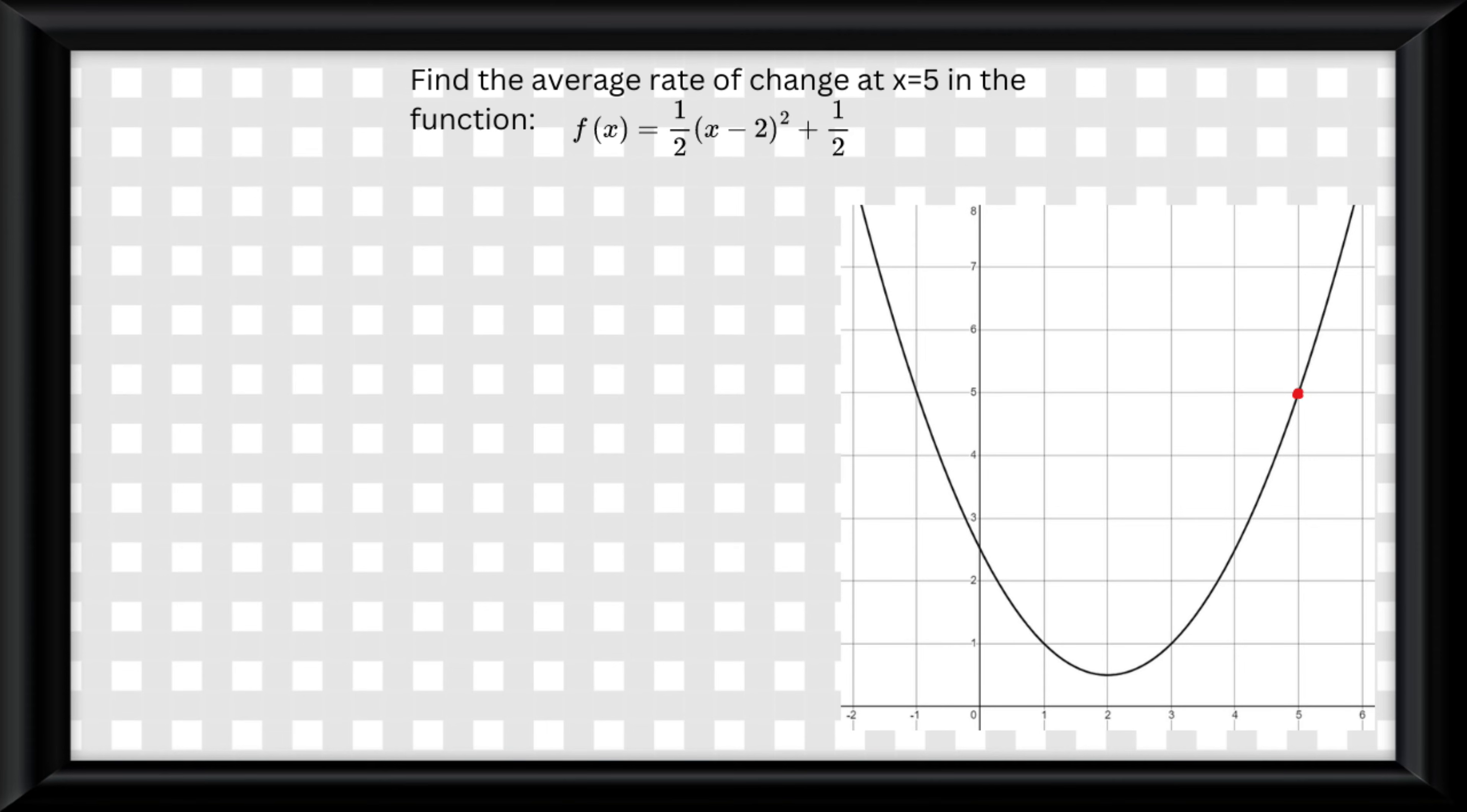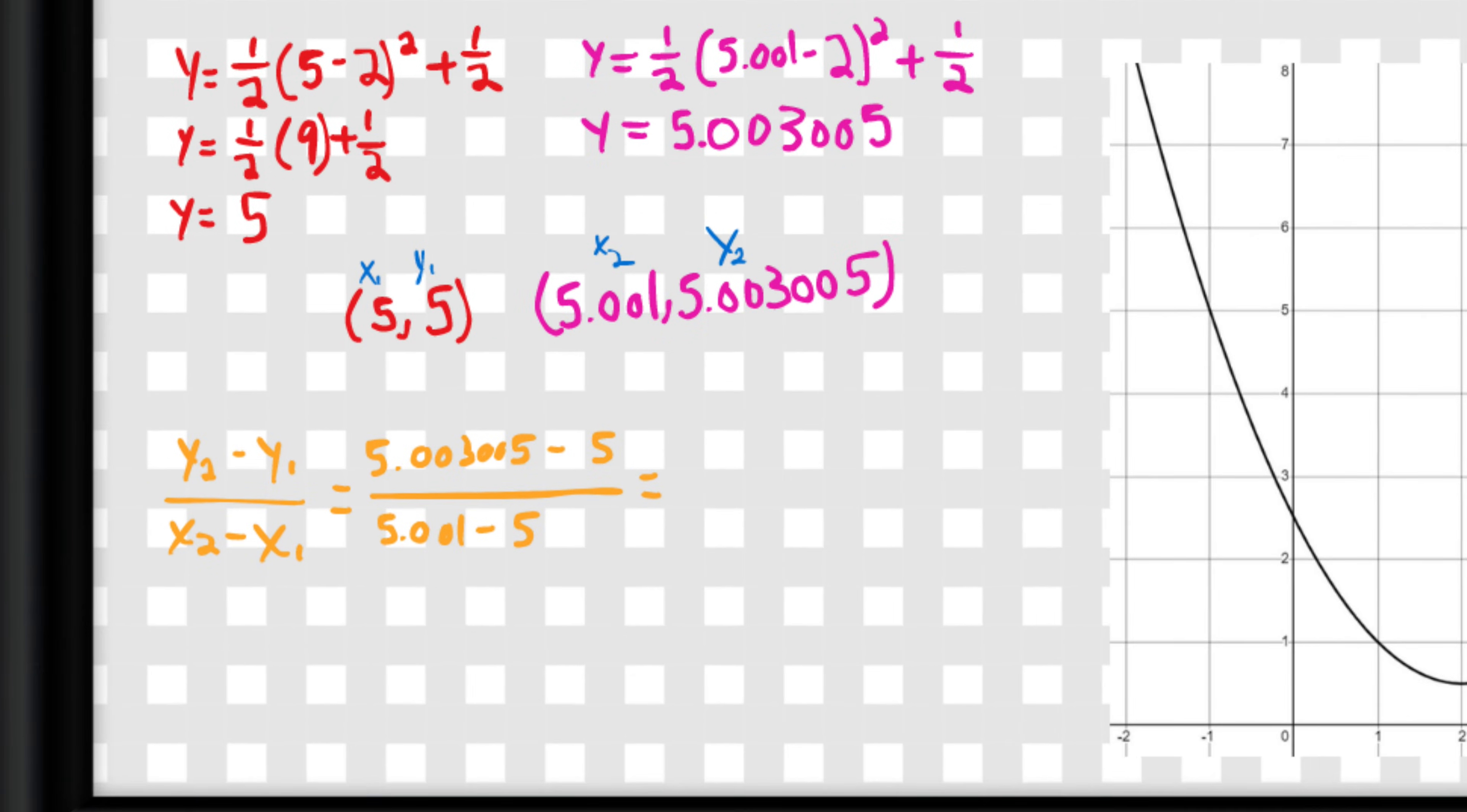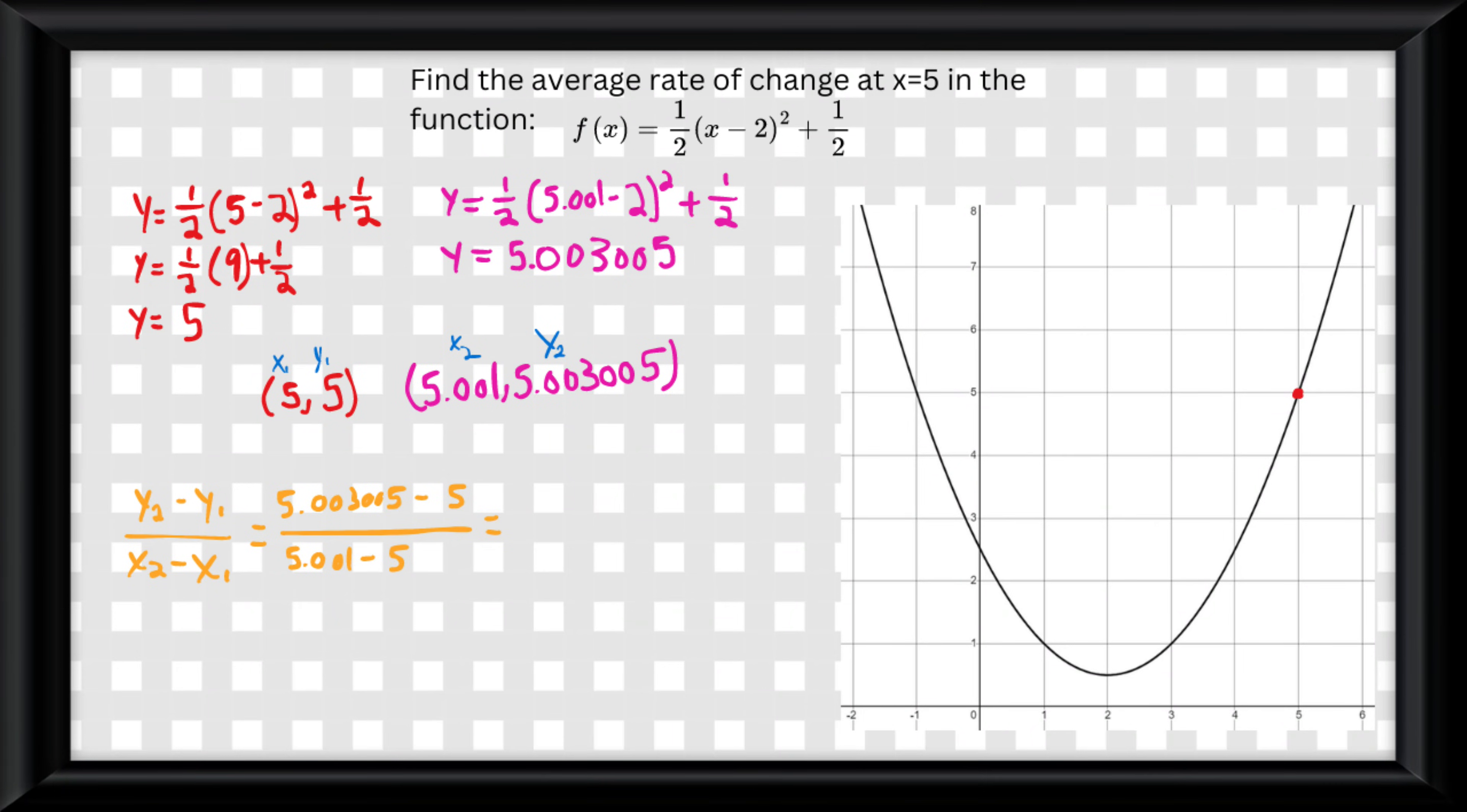If you were asked to calculate the average rate of change at a specific point like in this equation, where it says to do it at x equals 5, simply find what y equals at 5 and what y equals at a point right next to 5, so we'll go with 5.001, label them, then plug them into the equation y2 minus y1 over x2 minus x1, and solve.